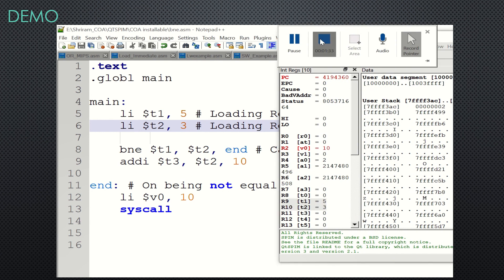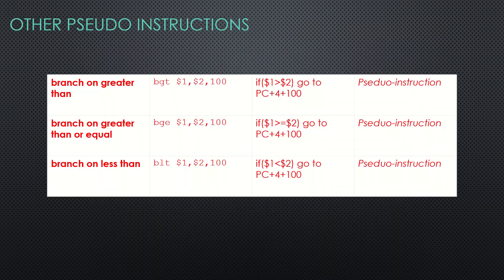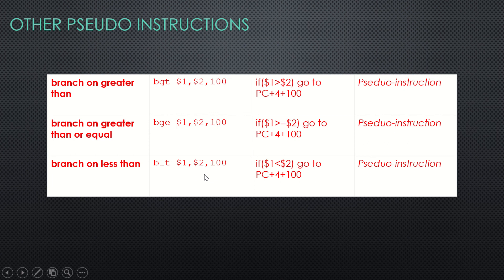We've completed BEQ and BNE. There are also pseudo instructions available in this assembler: BGT (branch on greater than), which branches if the first register's content is greater than the second; BGE (branch on greater than or equal to); and BLT (branch on less than), which branches if the first register is less than the second. All three are pseudo instructions — they are part of the assembler, not regular MIPS instructions.